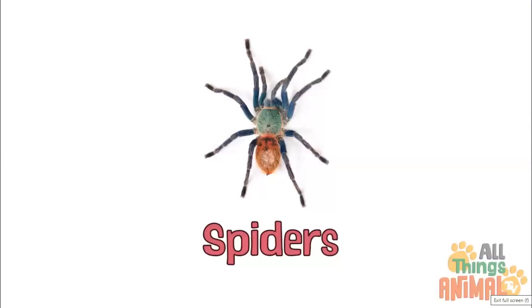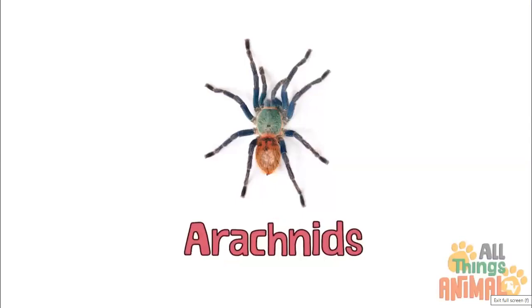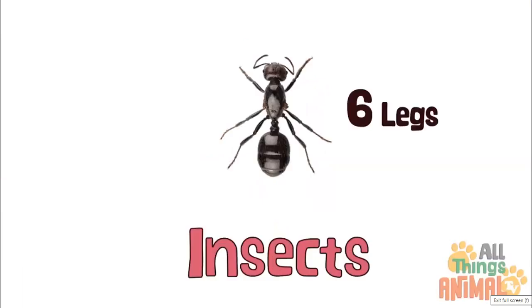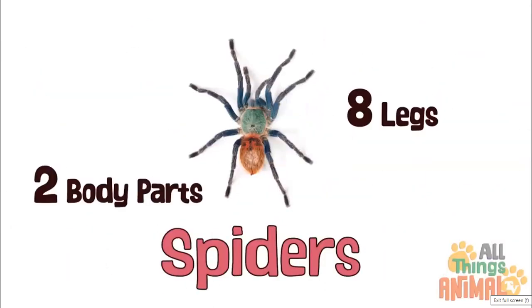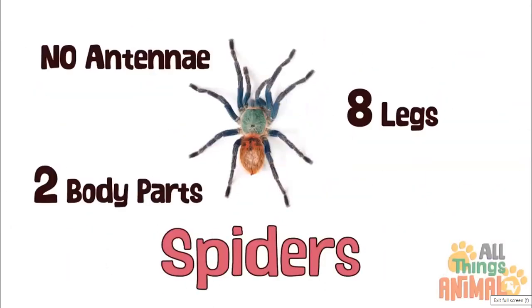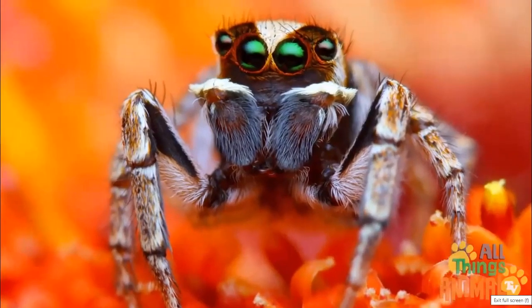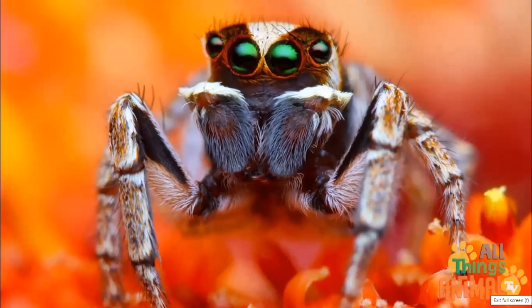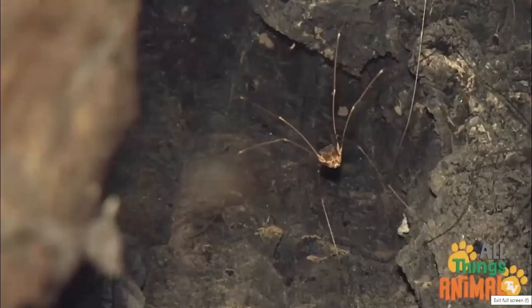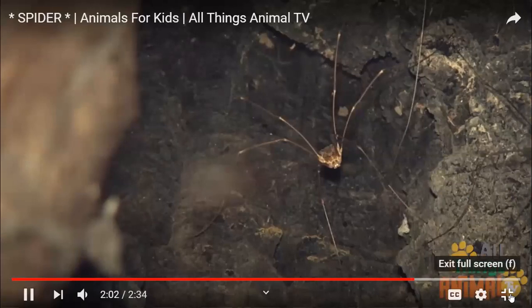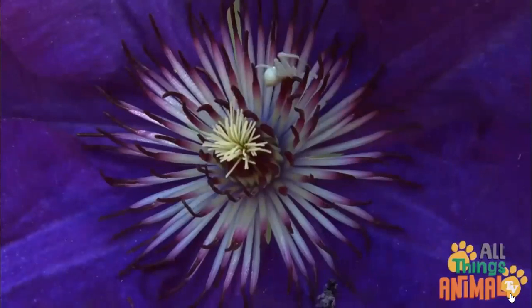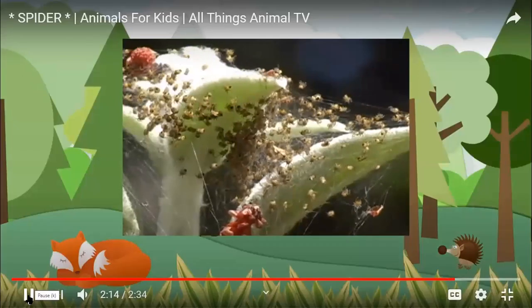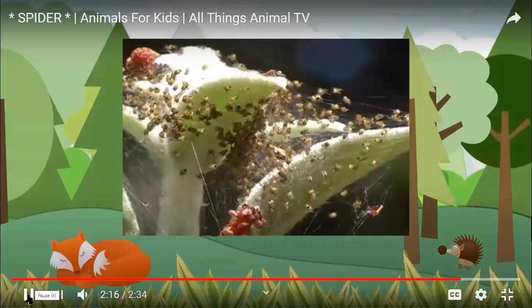Did you know that spiders are arachnids, not insects? Insects have six legs, three body parts, and antennae, while spiders have eight legs, two body parts, and no antennae. They can have up to eight eyes too, but they still don't have very good eyesight. Daddy long legs have really long legs, and some spiders are brilliant white. Spiders can lay up to a thousand eggs — that's a lot of babies when they hatch.